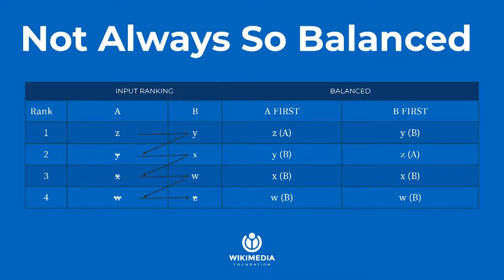But balanced interleaving has its problems. In this example, the A result set is Z, Y, X, W, and the only difference in the B ranker is that Z moved from the top to the bottom. What happens to balanced interleaving in this case is that most of your credits are going to go to B. So if your users are clicking somewhat randomly or your result sets aren't particularly great, this is basically going to bias itself towards B — the B ranker is going to come out on top by probability even if it isn't necessarily better.